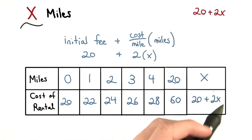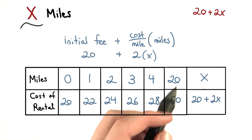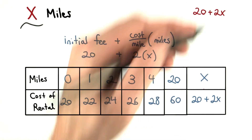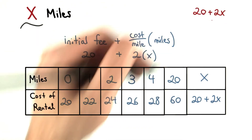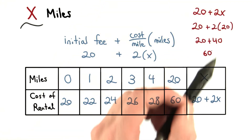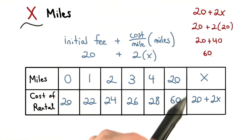And what's great is we can check this. If we drive 20 miles, we know the cost should be $60. Let's plug in 20 for x to make sure that's true. Sure enough, what do we find? The price is $60. This expression works.